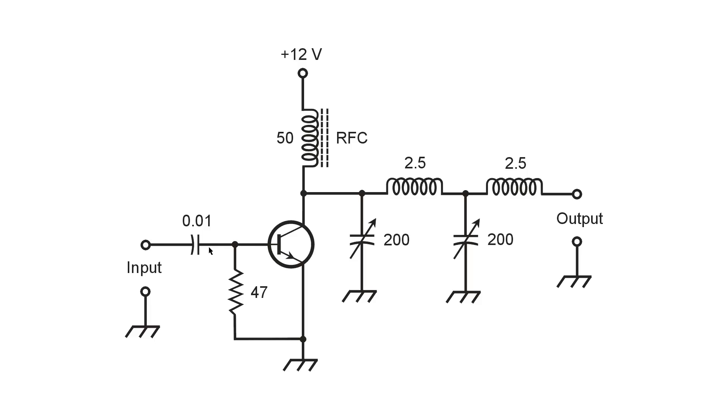RF choke keeps the signal away from the power supply, blocking capacitor lets the signal through, but keeps DC away from the input circuit, whatever that might happen to be.